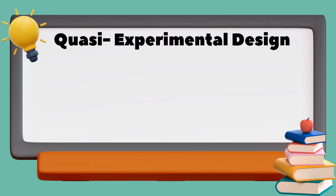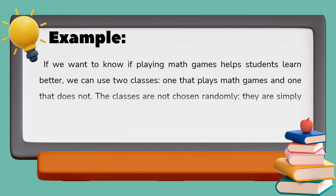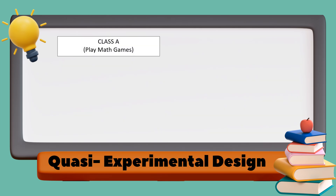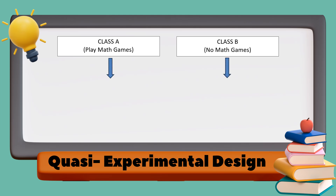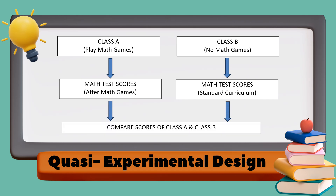In quasi-experimental design, this design is similar to the true experiment, but instead of randomly choosing groups, researchers use groups that already exist — like two different classes in a school. For example, to know if playing math games helps students learn better, two classes are used: one that plays math games and one that does not. The classes are not randomly assigned; they are simply the available ones. After some time, their performance is compared.